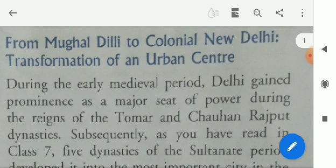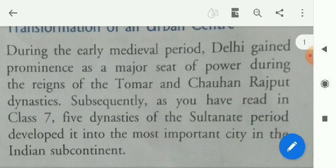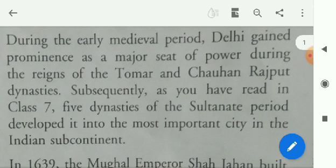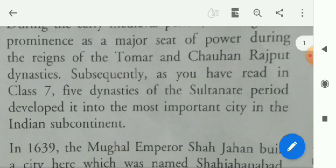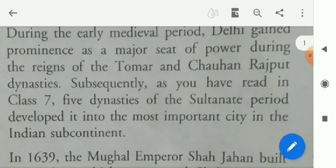The transformation takes place as Mughal Delhi was converted into Colonial New Delhi. Colonial rule converted the old name of Delhi, which now became New Delhi. This was a very important urban center for the British. During the early medieval period, Delhi gained prominence as a major seat of power during the reigns of the Tomar and Chauhan Rajput dynasties. These two powerful dynasties are considered the last Hindu rulers of Delhi.